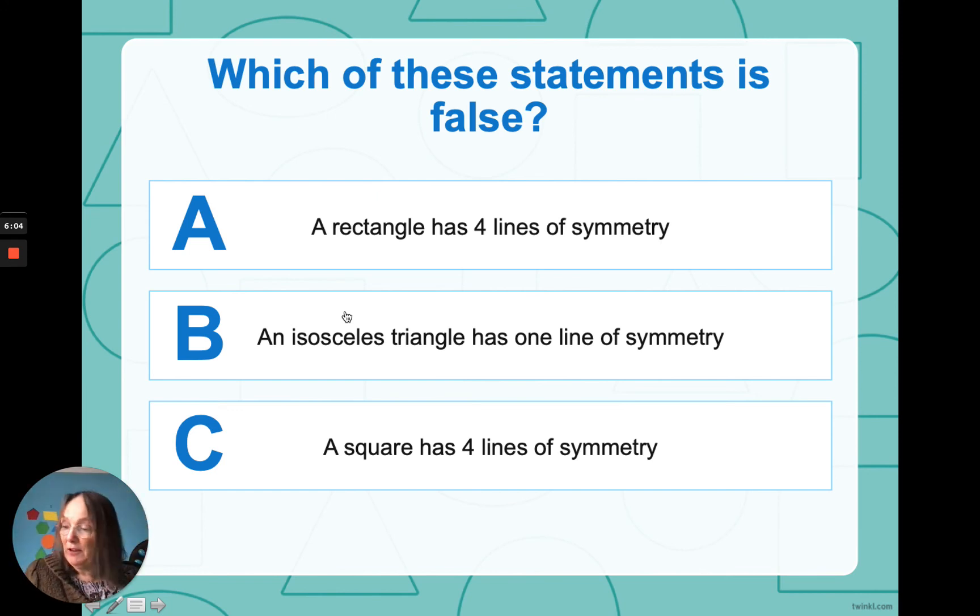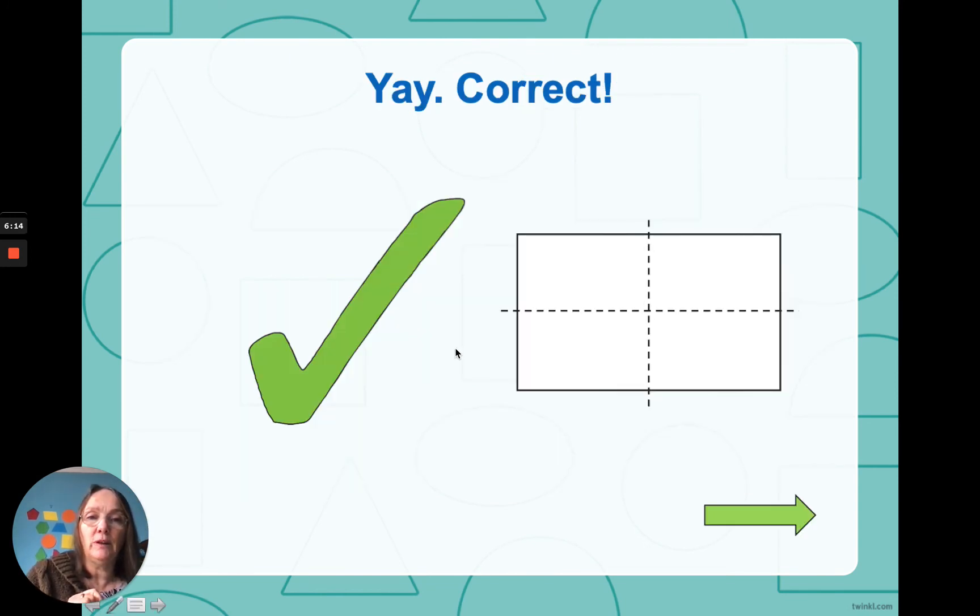So, the statement that is false is A, a rectangle, because it has only two lines of symmetry. Hopefully it'll show us. There we go, one, two.